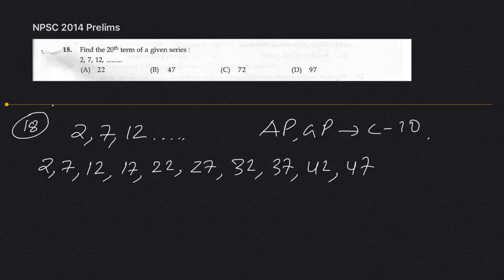So the series goes: 2, 7, 12, 17, 22, 27... This is the first term, second, third, fourth, fifth, sixth, seventh, eighth, ninth, tenth — counting up through the sequence.